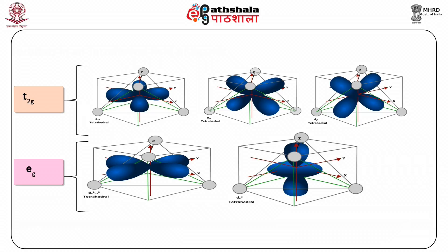In a tetrahedral field, the ligands are sited at opposite corners of a cube which circumscribes the octahedron. Hence the orbitals which are directed between the ligands in the octahedral field are now directed towards the ligands in the tetrahedral orientation. Similarly, those orbitals which were directed towards the ligands in the octahedral orientation are now directed between the ligands in a tetrahedral field.